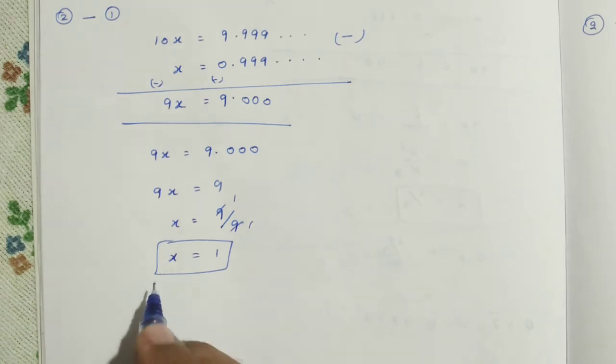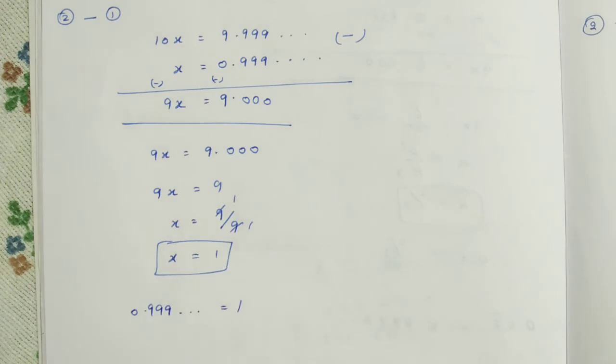What we assumed as X value? 0.999, etc. is equal to 1.